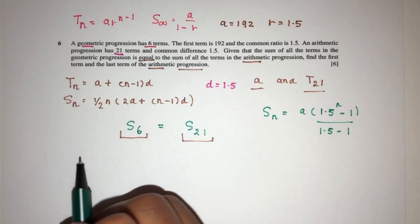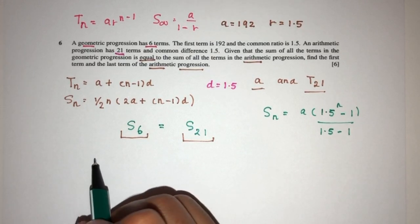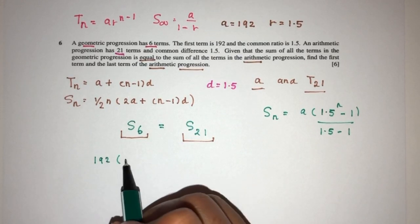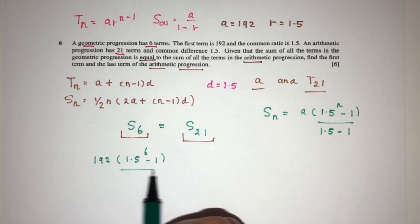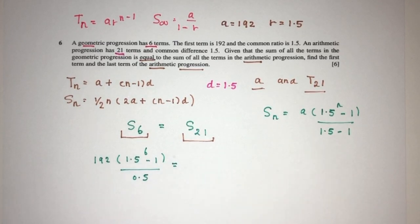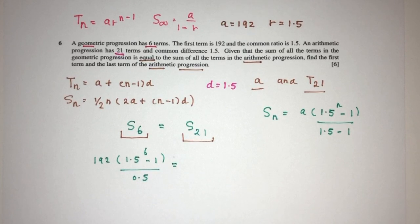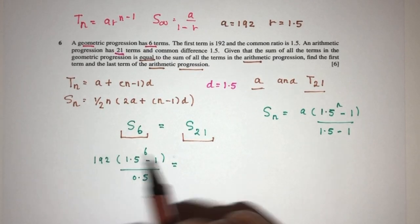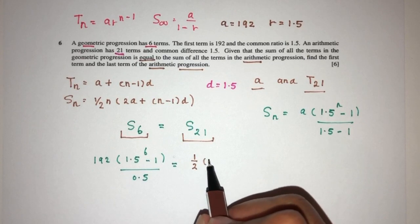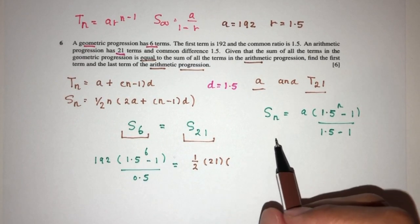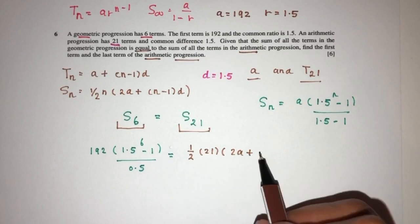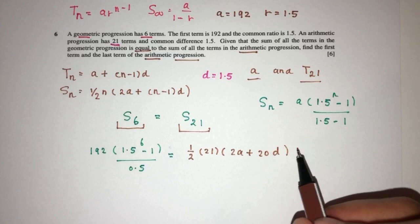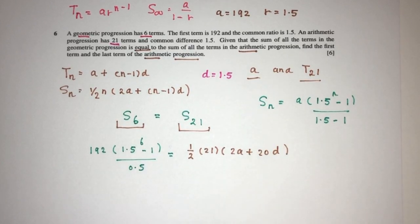Sum of the first 6 terms, that should be, the first term is 192, 1.5 is the common ratio, n is 6 minus 1 over 1.5 minus 1 is 0.5. That should be equal to the sum of the first 21 terms. That will be half, n is 21, 2a, 2 times a we don't know, plus n minus 1, n is 21 minus 1 is 20, times d is the difference. We know this is 1.5, so I will replace it afterwards.